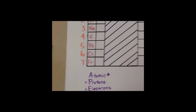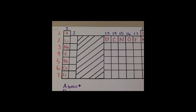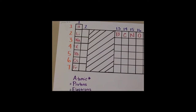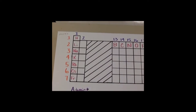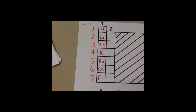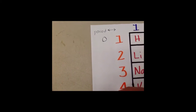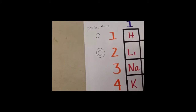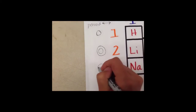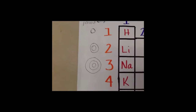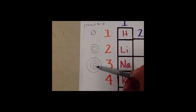So we should have groups 1, 2, and 13 through 18, and periods 1 through 7. Your period numbers tell you how many shells an atom has. Period one has one shell, period two has two shells, and period three has three shells. We will not go past period three — hence the 2-8-8 rule.